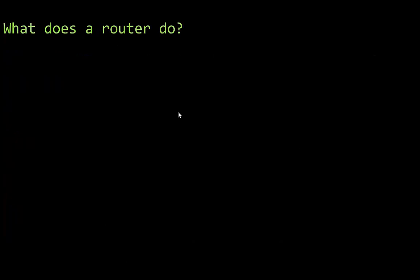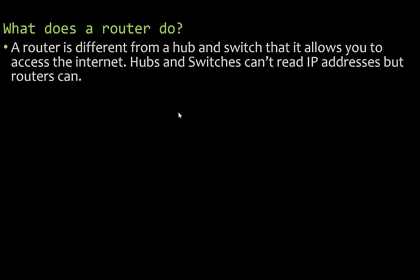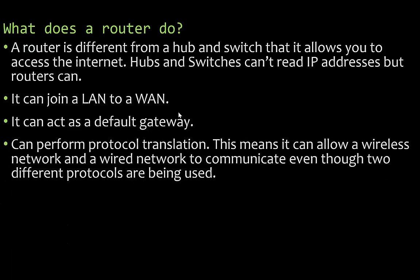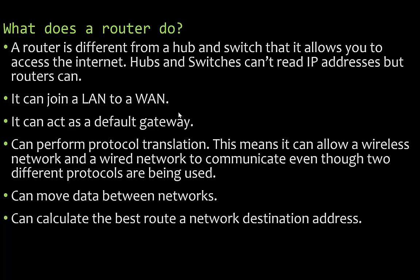A router is different from a hub and switch because it allows you to access the internet — hubs and switches can't read IP addresses but routers can. It can join a local area network to a wide area network and act as a default gateway. It can perform protocol translation, allowing a wireless network and a wired network to communicate even though two different protocols are being used. It can move data between networks and calculate the best route to a destination address — also known as packet switching. Routers can be both wired and wireless.